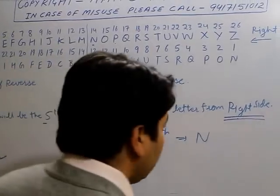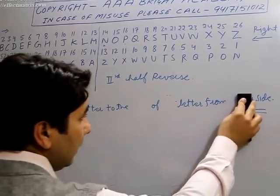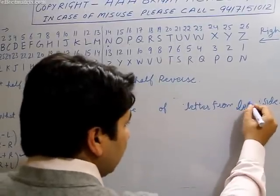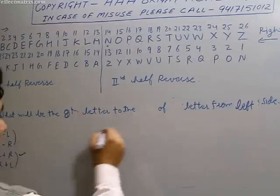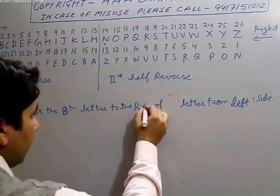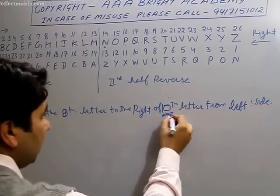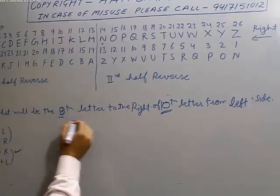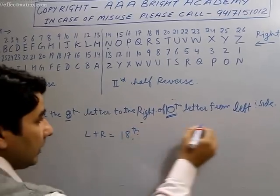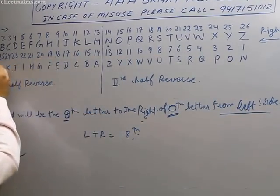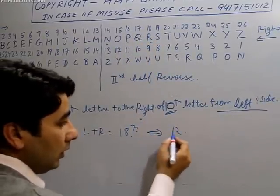Now let's change to a left-and-right example. What will be the 8th letter to the right of the 10th letter from the left side? Left to right means plus: 10 plus 8 equals 18. You have to find the 18th letter from the left side. Going from the left side, the 18th letter is R. So the answer is R.